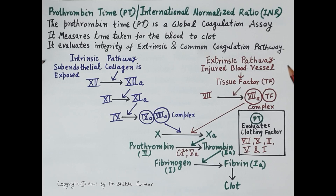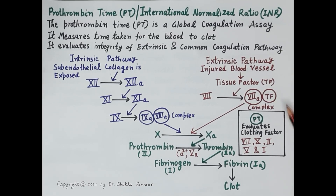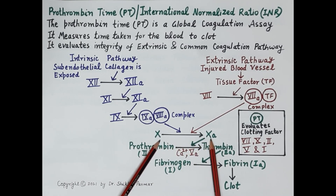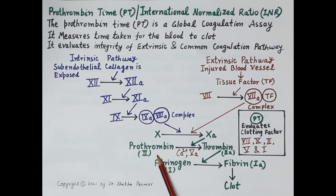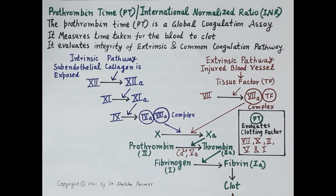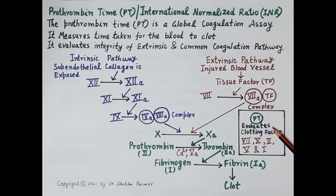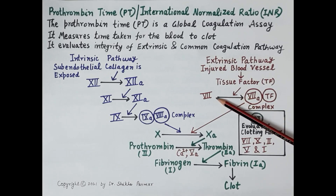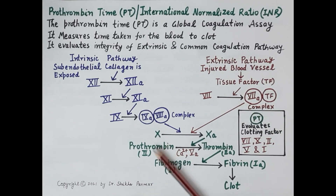Both pathways stimulate clotting factor 10. Clotting factor 10 is activated to factor 10a, which further results in the activation of clotting factor 2 — that is prothrombin — to thrombin, fibrinogen to fibrin, and finally a clot is produced. Prothrombin time evaluates the integrity of clotting factors 7, 10, 2, 5, and 1.